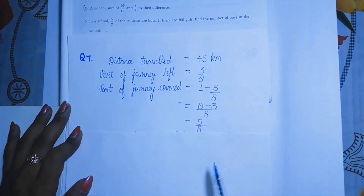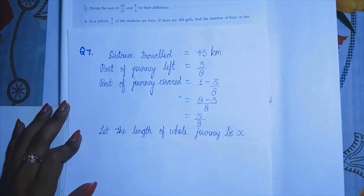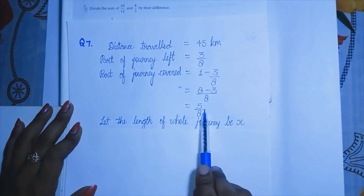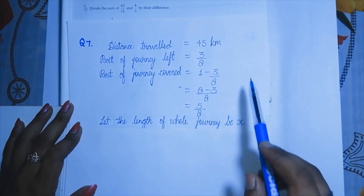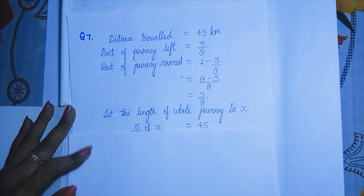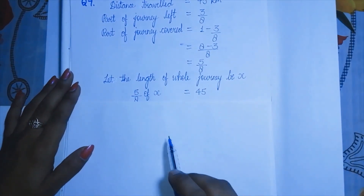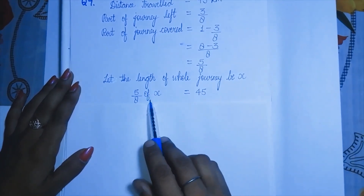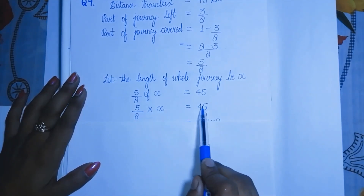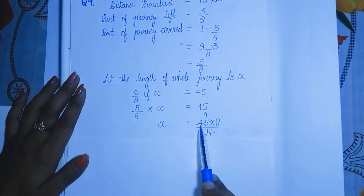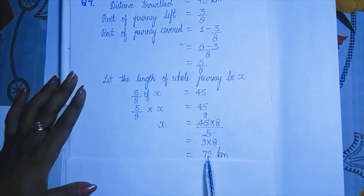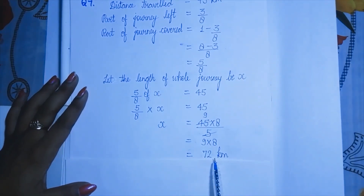Let the length of the whole journey be x. Then 5 by 8 of x equals 45. That means 5 by 8 into x equals 45. Cross multiplying: x equals 45 times 8 by 5. Five simplifies 45 to give 9, and 9 times 8 is 72. So the required distance is 72 kilometers. That is the answer.